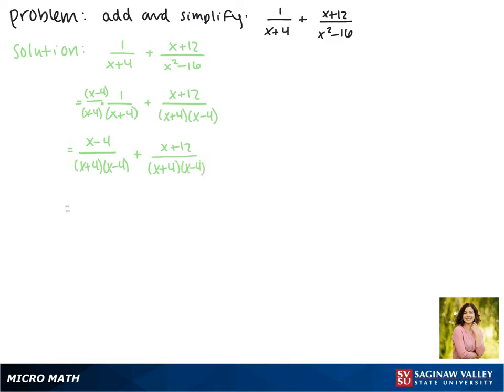Now that we have common denominators, we can add the numerators. x plus x gives us 2x, and negative 4 plus 12 gives us 8, and our denominators will stay the same.